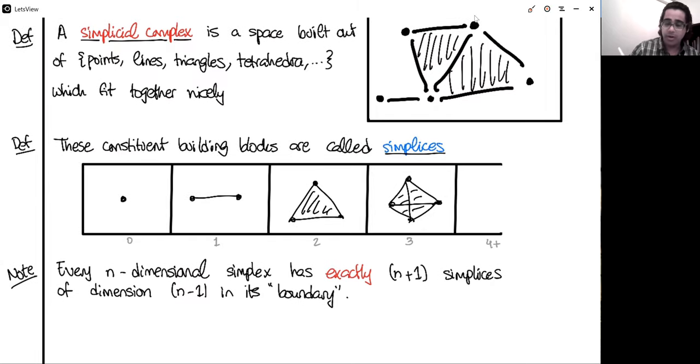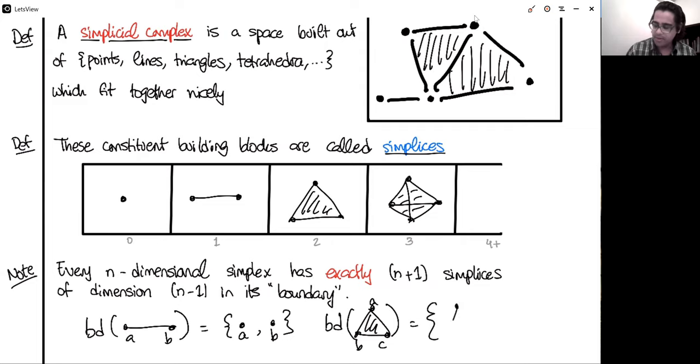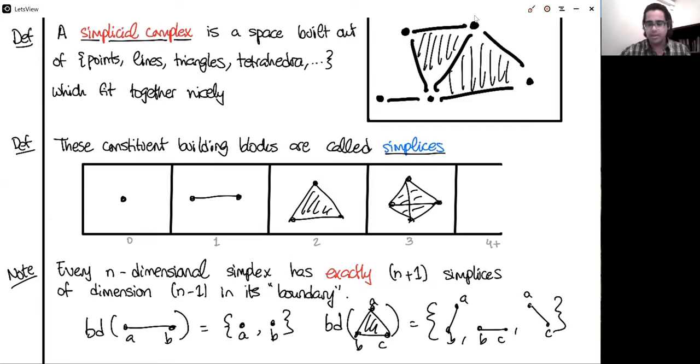And just so we're clear on what this looks like, the boundary as a set of, say this edge AB, is going to be the set consisting of the vertex A and the vertex B. And if you want to get a little bit more ambitious, you could try the boundary of this triangle, this two-simplex in our language. Let's say ABC. It's going to contain the three edges: AB, BC, and AC. So that's what this looks like. You build a space out of these triangles and these boundary relations.